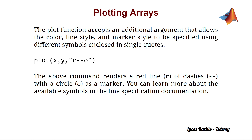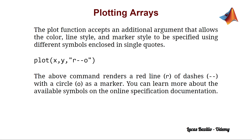Something very interesting is that the plot function also accepts additional information. For instance, we can set the color of the graph, the line style, and also the marker style with different symbols. For example, writing 'r--o' means a red line with dashes and a circle marker. You can learn more about available symbols in the line specification documentation on the MATLAB website.